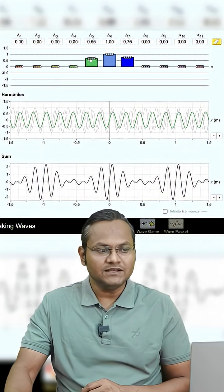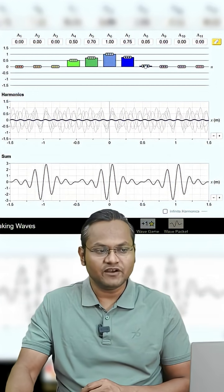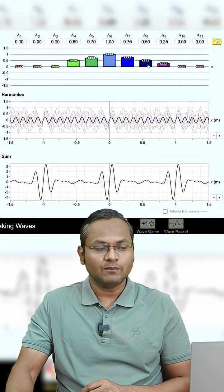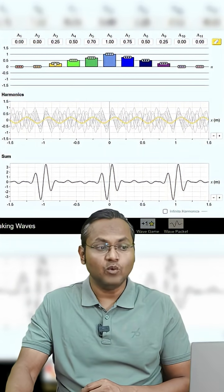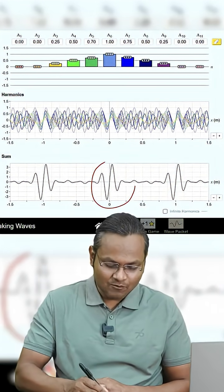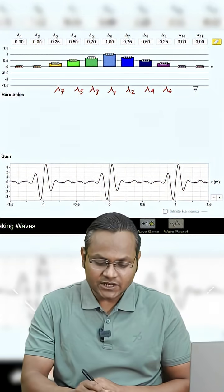I can take this process forward and add multiple waves having slightly different wavelength and slightly different amplitude in this manner, and then we can end up creating something that resembles what is known as the wave packet. Here you can see that we have achieved a localized wave packet by the addition of sine waves.